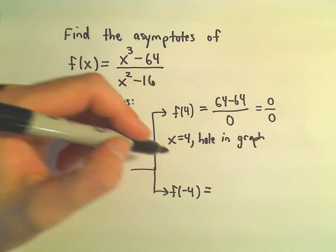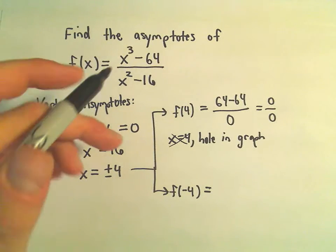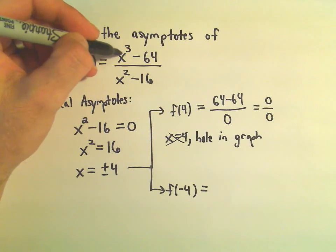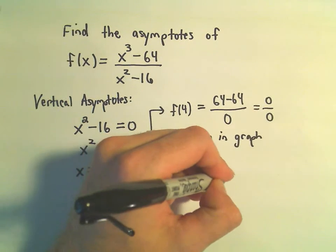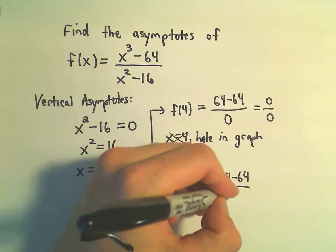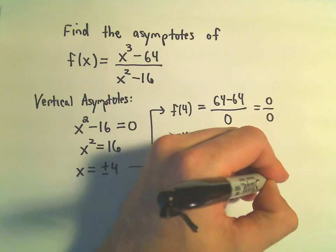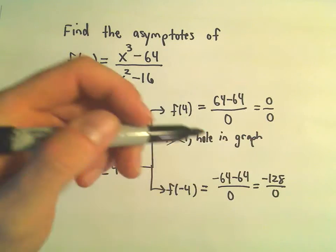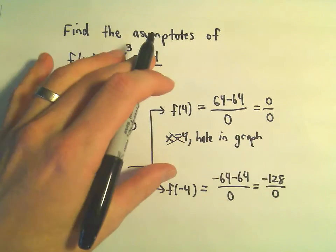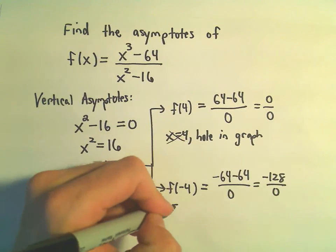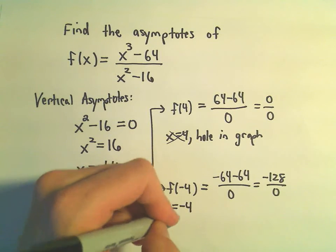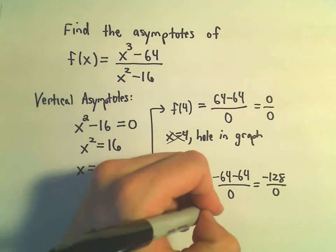Okay, so no vertical asymptote there. At negative 4, though, if we take negative 4 cubed, we'll get negative 64. And the denominator, again, we'll get 0. Well, that's negative 128 over 0. That's definitely something non-0 over 0. So that tells me at x equals negative 4, there is going to be a vertical asymptote.